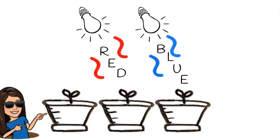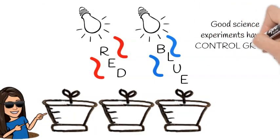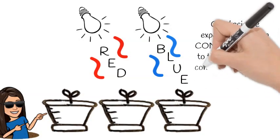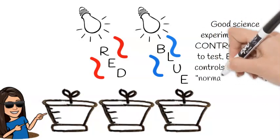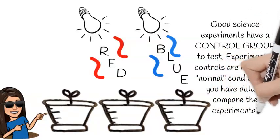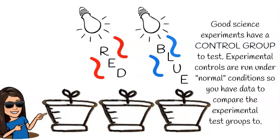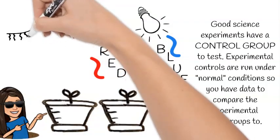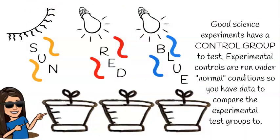You may wonder why there is a third pot. Well, good science experiments have a control group to test. Experimental controls run under normal conditions so that you can have data to compare the experimental test groups. In this experiment, we will have a control group growing in natural sunlight conditions for comparison.